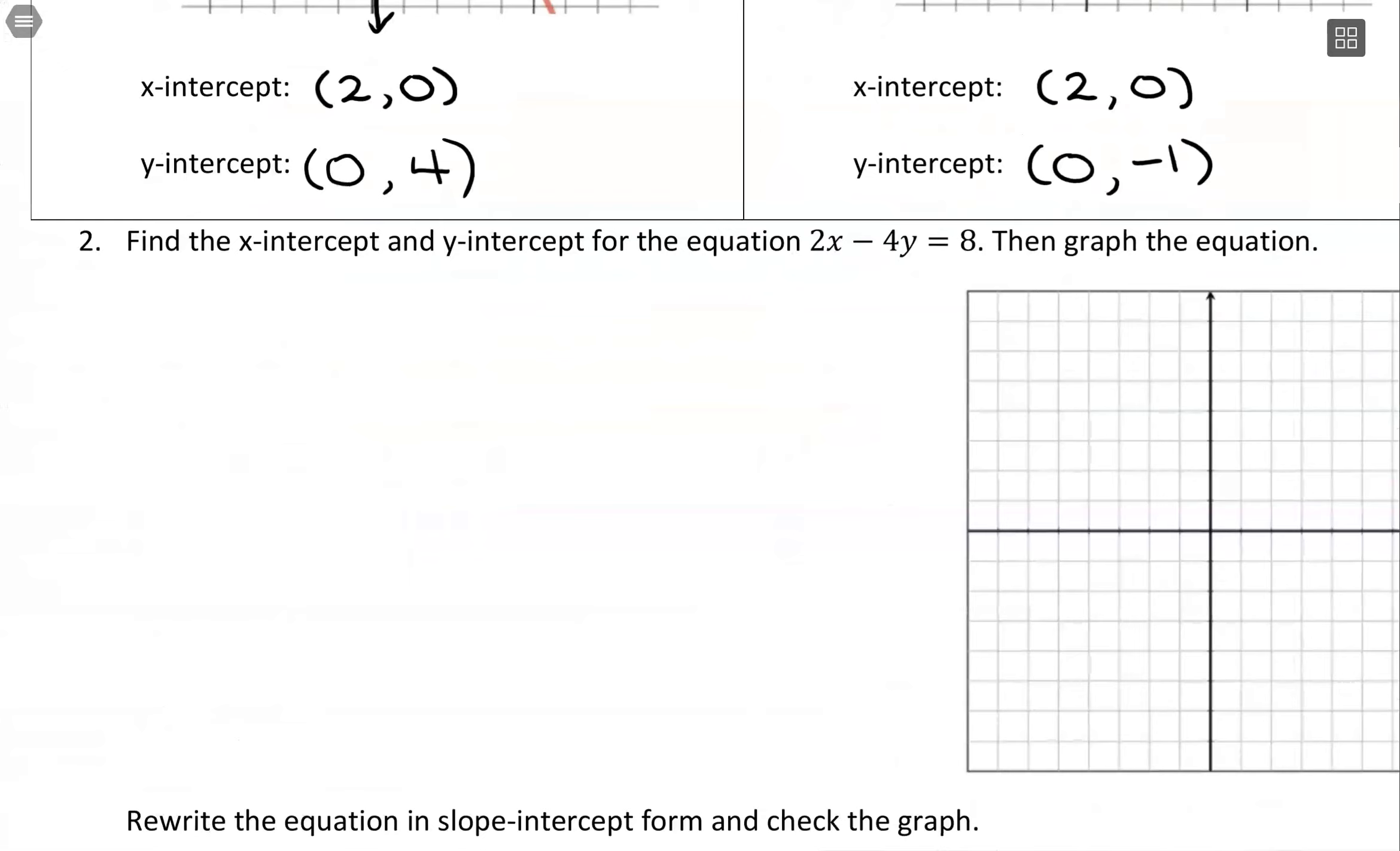Finding them given an equation. So first let's find the x-intercept. This is where y is equal to 0, and that's what we want to use. We want to plug in 0 for y. So I'm going to have 2 times x, because I need to find what x is, minus 4 times, and then where y is, I'm going to stick a 0, equals 8. And we're going to solve for x.